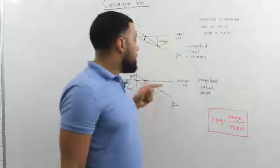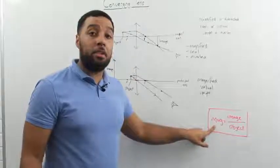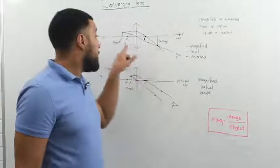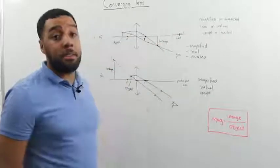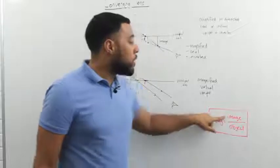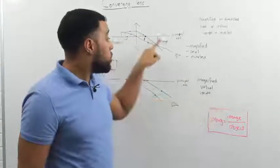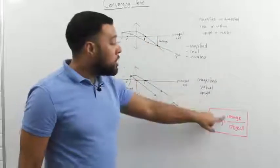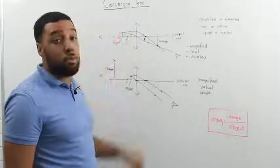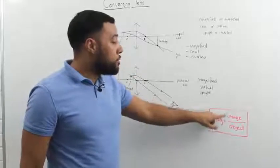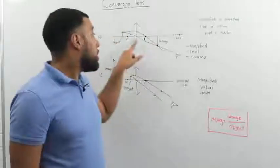For either of these two examples, you could be asked to calculate the magnification of the image or what's the magnification of the lens. Well to do that, you would need a ruler. And you would measure the height of the image using your ruler and you would divide it by the height of the object. Again using a ruler. If you divide those two numbers together, it would tell you the magnification of the lens.